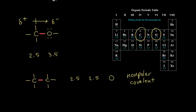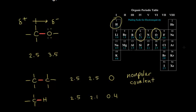Let's compare carbon to hydrogen. Carbon has an electronegativity value of 2.5 and hydrogen has a value of 2.1, so that's a difference of only 0.4. There is a difference in electronegativity, but it's very small, and most textbooks consider the bond between carbon and hydrogen to still be a nonpolar covalent bond.